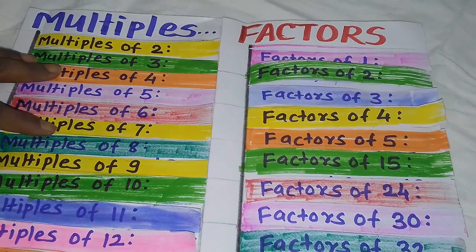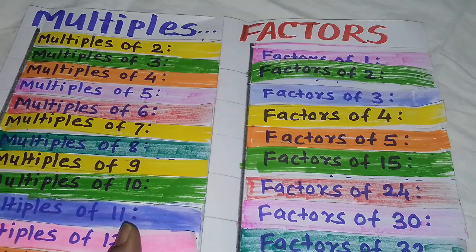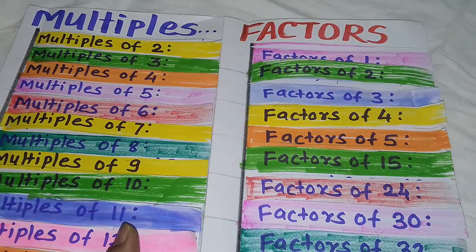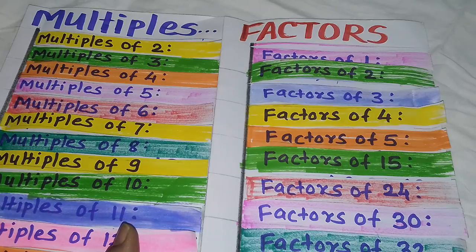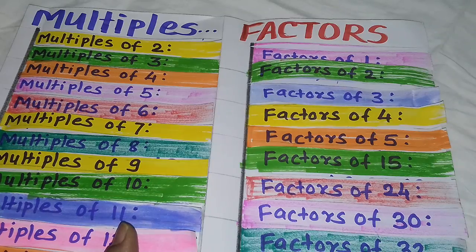So the major difference is: multiples start with that same number, and factors start with the number 1 and end with that number itself.